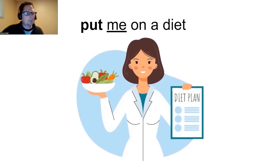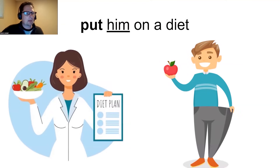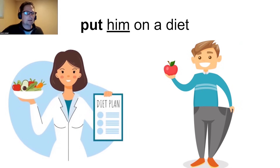Or you can use the verb 'put.' Example: the doctor put me on a diet. Or maybe your coach — if you play sports, your coach put you on a diet. After 'put,' we have the person: put me on a diet, put you on a diet. Example: his doctor put him on a diet. Pronunciation: 'put him' — the H is silent and the T sounds like a fast D because it's between vowels phonetically. His doctor put him on a diet. Did his doctor put him on a diet? That's right. His doctor put him on a diet. And did he lose a lot of weight? That's right. He lost a lot of weight.